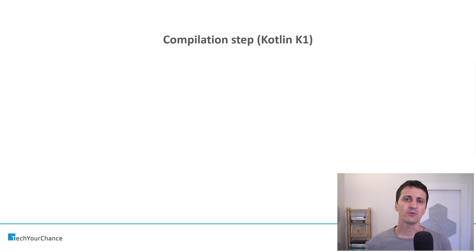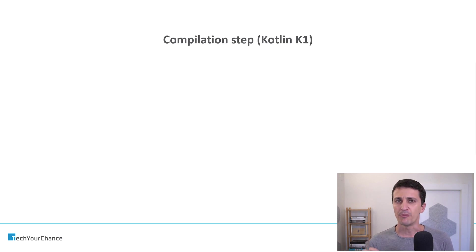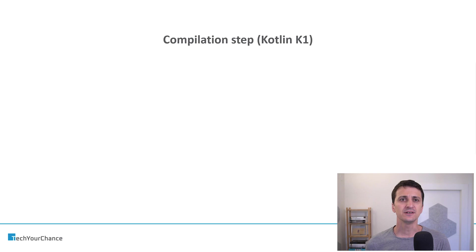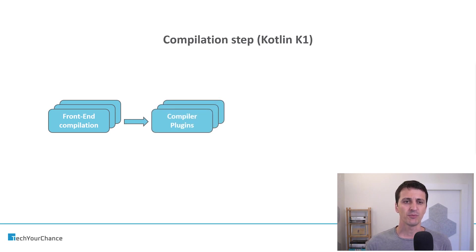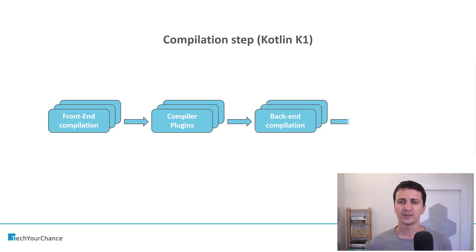Now let's discuss what's going on when we compile using the Kotlin compiler — specifically the Kotlin K1 compiler, the old Kotlin compiler. There is a newer version K2 which is being developed right now, but KSP still doesn't work with K2, so when we discuss KSP we need to understand K1. Just like with the Java compiler, it starts with front-end compilation, and then the results are fed into compiler plugins. The output of these compiler plugins goes to back-end compilation, and lastly we get the bytecode inside class files.